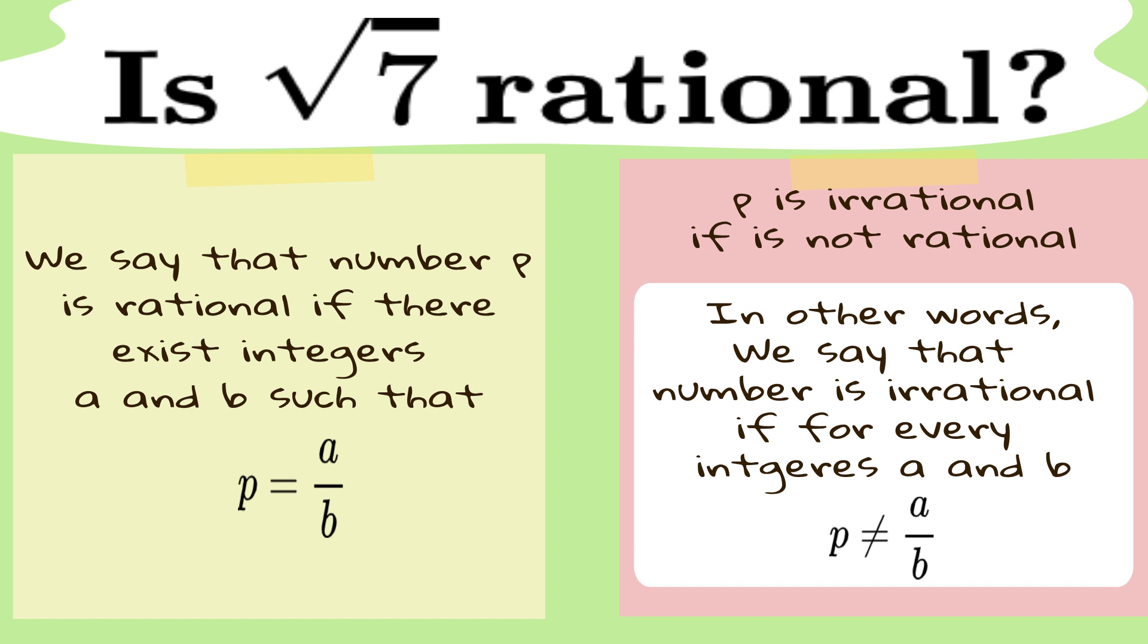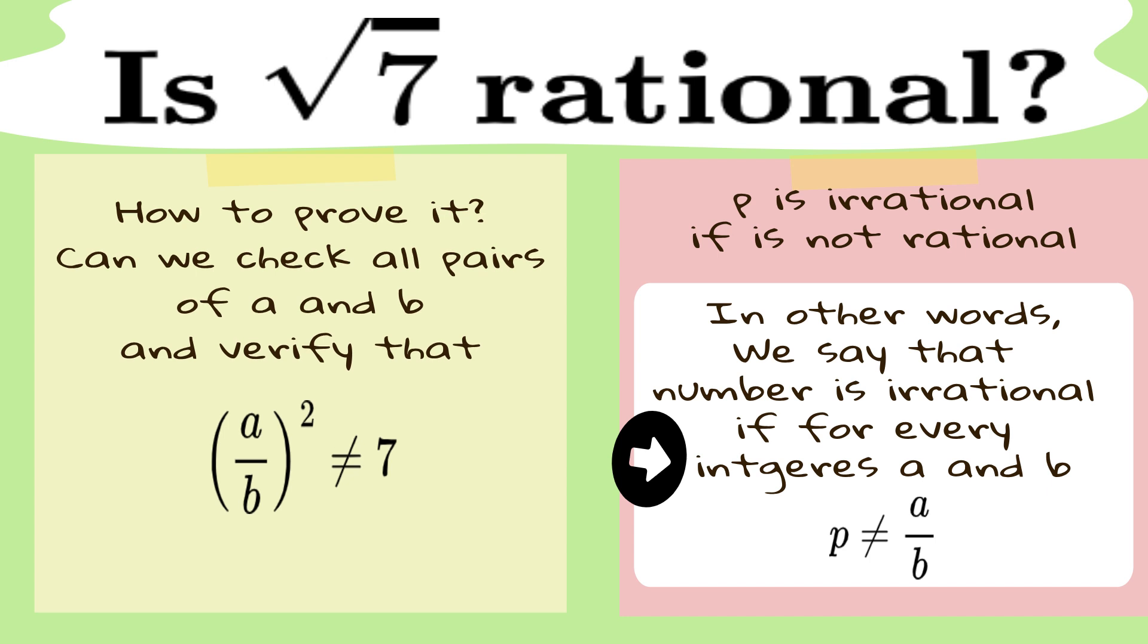Alright, here's the deal. I'm pretty convinced that the square root of 7 is irrational. But how do we prove it? I can't just go around testing every single integer, dividing, squaring, and hoping not to find that's equal to 7. That would take forever, literally, an infinite amount of time. So, we need a better plan.